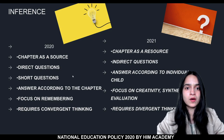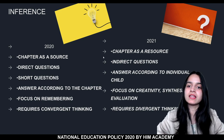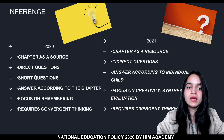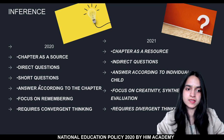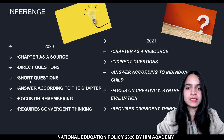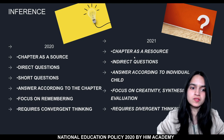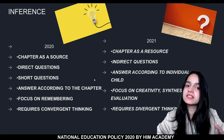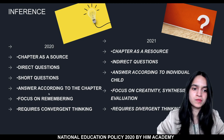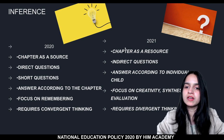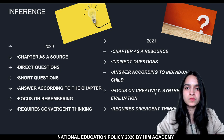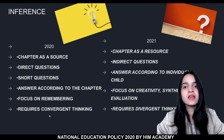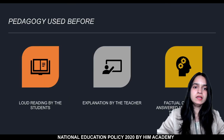To summarize the differences between the pedagogy of 2020 and 2021: before, the chapter was used as a source; now it is used as a resource. Before, direct questions were asked; now indirect questions are being asked. In 2020 questions were shorter; in 2021 we expect longer questions. In 2020 answers were according to the chapter; now answers are according to the individual child. In 2020 the focus was on remembering; in 2021 the focus is on creativity, synthesis, and evaluation. 2020 required convergent thinking; 2021 requires divergent thinking.